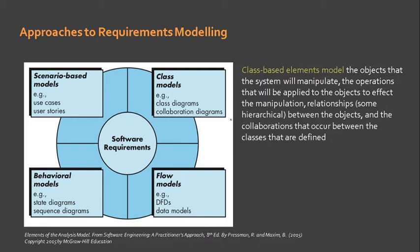The next model is what we call the class-based model. Class-based elements model the objects that the system will manipulate, the operations that will be applied to the objects to affect the manipulation, relationships between the objects, and the collaborations that occur between the classes that are defined. This type of modeling follows an object-oriented approach where all the important elements of the system are modeled as objects.